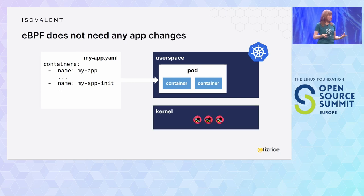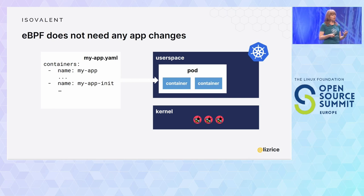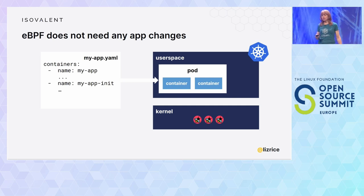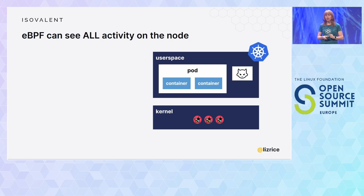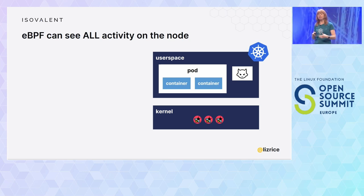In contrast with eBPF, we only have to instrument the node one time. As soon as we load eBPF programs into the kernel, they can start observing and interacting with all the processes that are already running. You don't need to restart your pods, and there's no need to reconfigure them in any way for eBPF-based tooling to work. eBPF can see all of the activity on the node, so a malicious process is just as visible as regular processes.